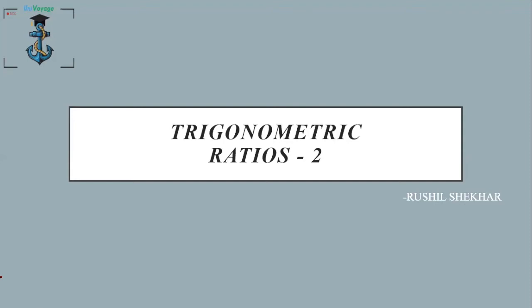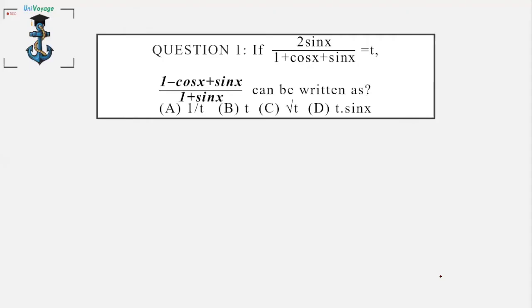The first question says that 2sinx / (1 + cosx + sinx) is equal to t. If this is the case, (1 - cosx + sinx) / (1 + sinx) can be written as what? There are four options, so we'll have to solve such questions by algebraic manipulation.